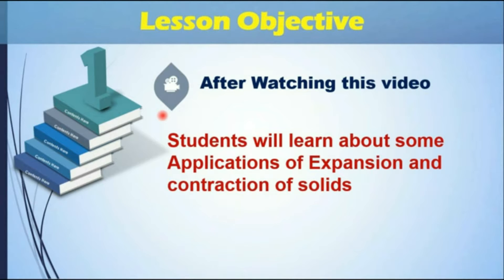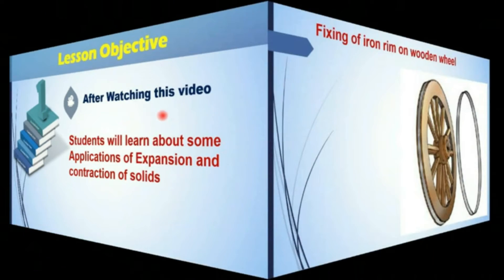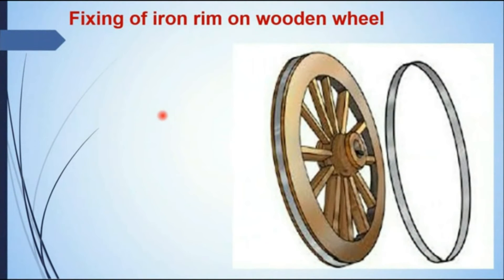One application of expansion and contraction of solids is fixing of an iron rim on a wooden wheel. Initially the diameter of the iron rim is smaller than the wooden wheel. When the iron rim is heated, it expands and its diameter increases, and the wooden wheel can be easily placed in it.